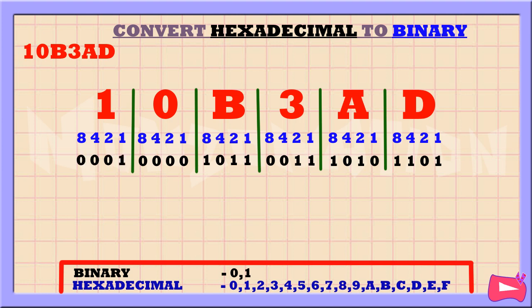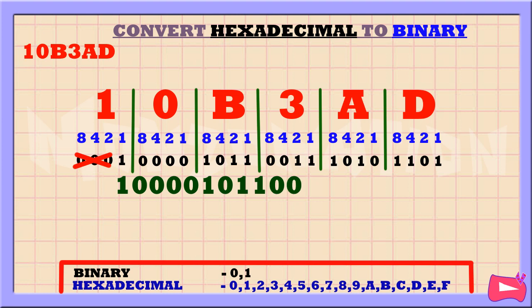1 is equal to 1, so we're going to replace 1 with 1. We didn't use 8, 4, and 2, so let's replace them with a 0. Let's get rid of the leading 0s, because a binary number always starts with 1.